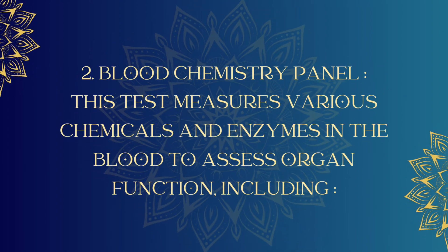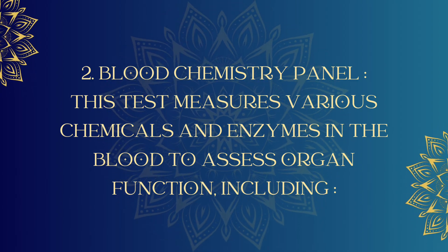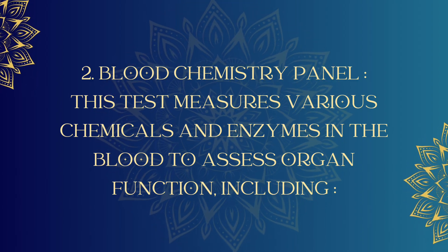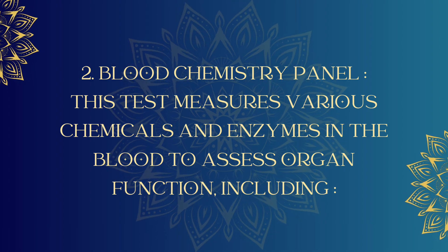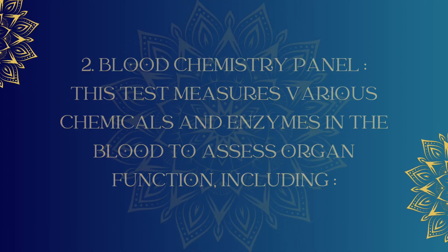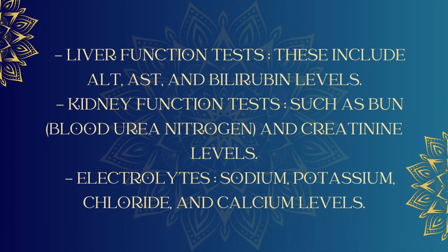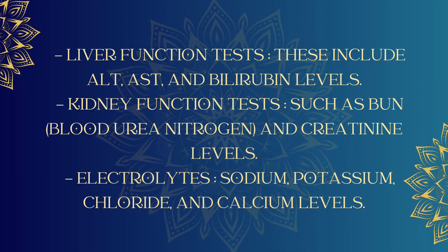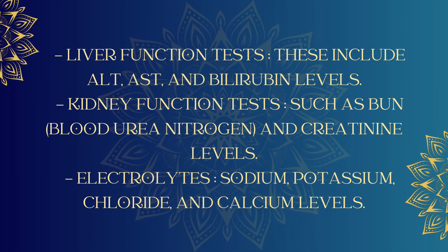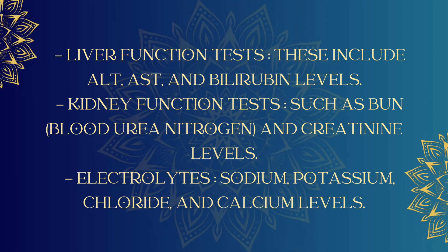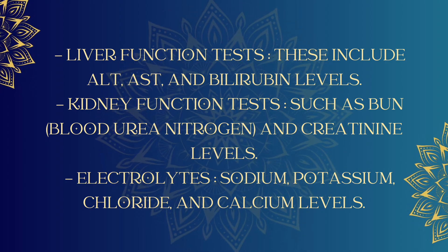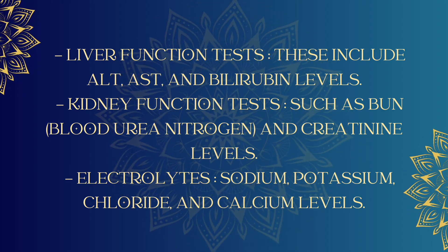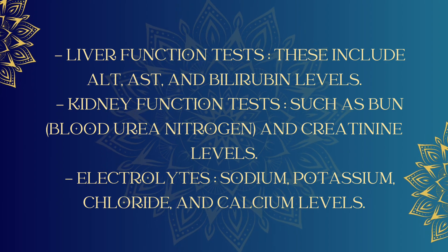2. Blood Chemistry Panel. This test measures various chemicals and enzymes in the blood to assess organ function, including liver function tests — ALT, AST, and bilirubin levels — kidney function tests such as BUN (blood urea nitrogen) and creatinine levels, and electrolytes: sodium, potassium, chloride, and calcium levels.